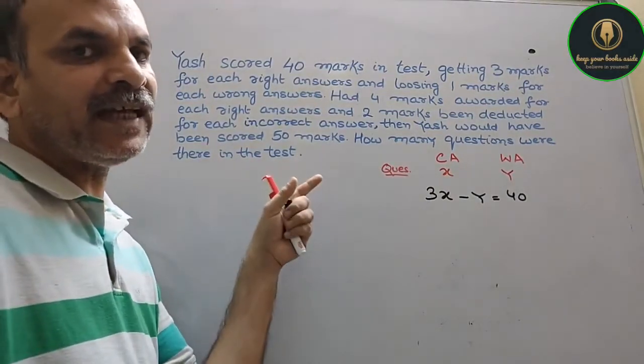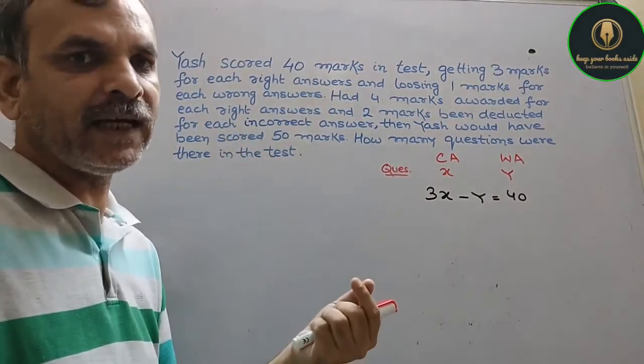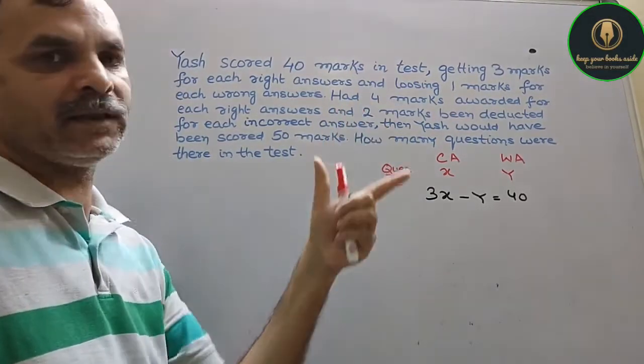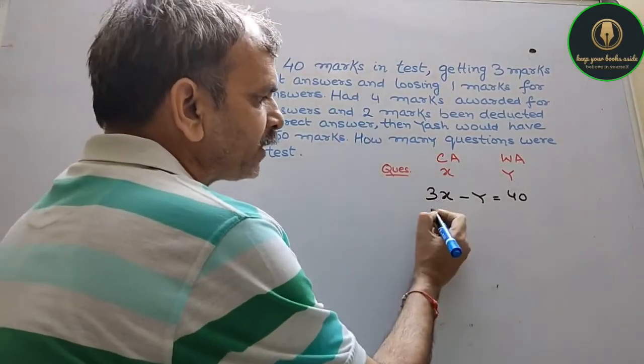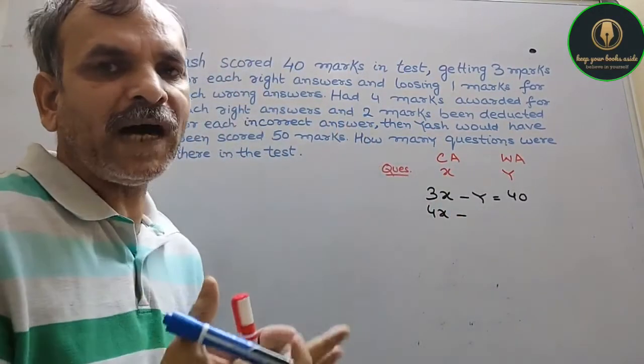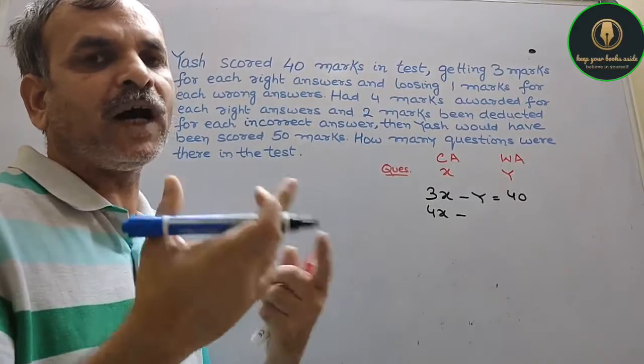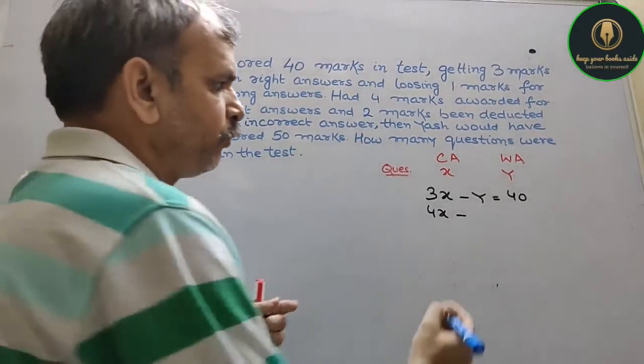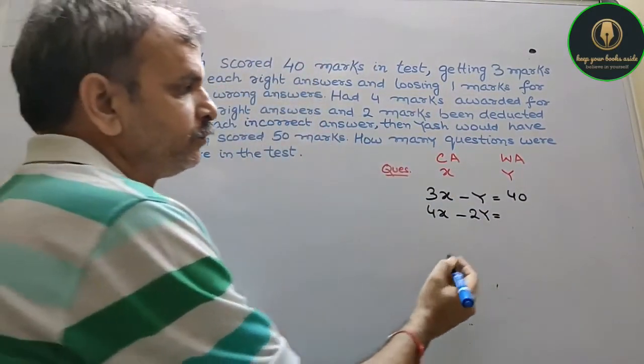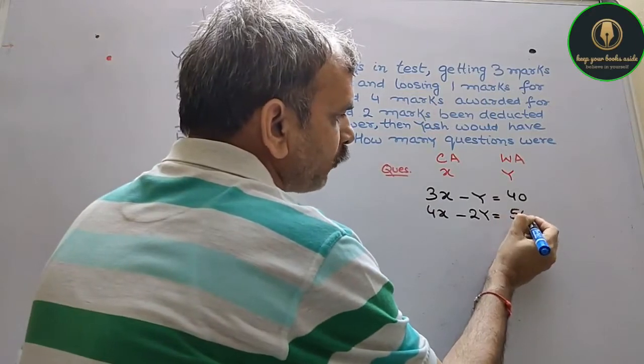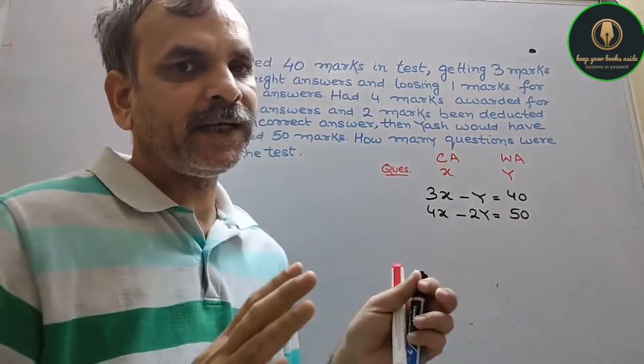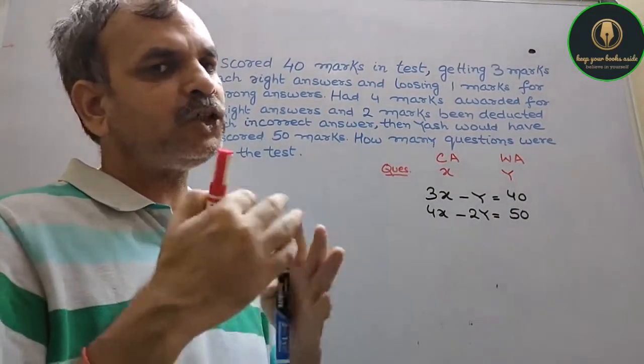Now, second condition is that if we give him marks in a different way, then for every correct answer he will get 4 marks. That means 4 into X is 4X. And he will lose 2 marks in every wrong answer. That means minus 2Y. Then he would have scored 50 marks. So these are the two equations.